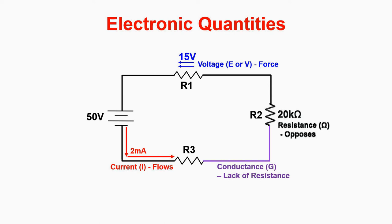Voltage is the force or potential energy that pushes current through a resistance. Current is the flow of electrons from the negative battery terminal to the positive battery terminal, and resistance is the opposition of current flow.